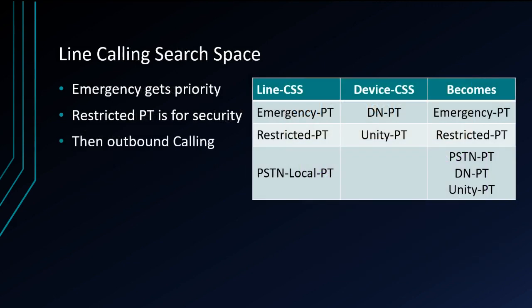If we take a look at another example, we have an emergency partition within our line — that's the first thing it's going to get to, and that's by design. If it's an emergency call, we want that partition available first. We also have a restricted partition, which we use for security for outbound calls — it's going to be second in our list. And then we go on out to our outbound calling. This is just a small example of what you might find. The line calling search space and device calling search space are truncated to become an ordered list when you actually go off hook — it just goes in order from the line down to the device.